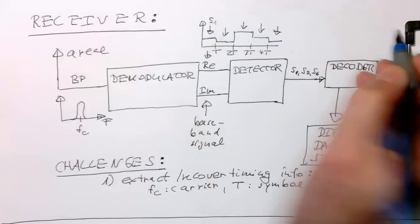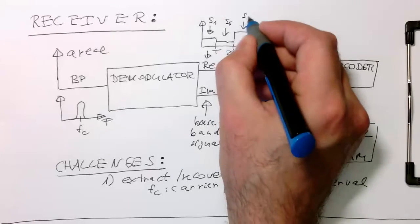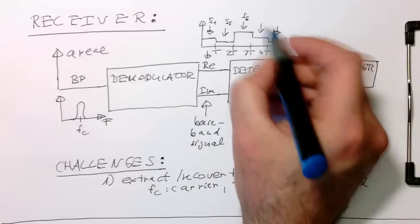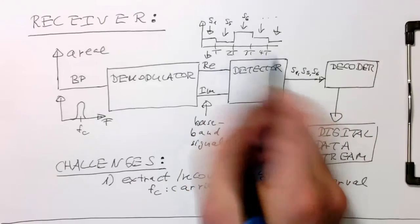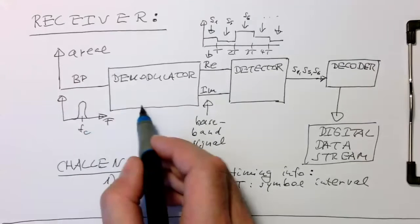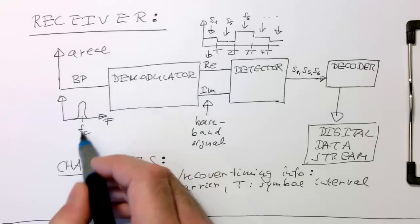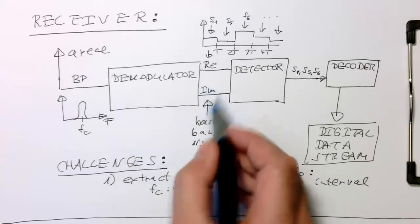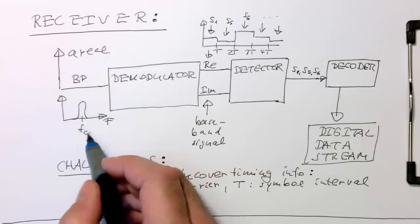So let's say this is s1, this is here s5, this is s6, and so on. And so we need to recover this T here, but at the same time also the demodulator here is working with the carrier frequency fc to recover the signal here, this baseband signal, and so also the fc needs to be recovered.